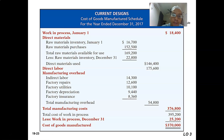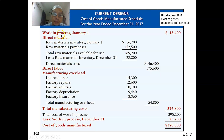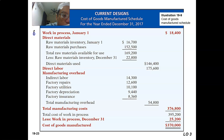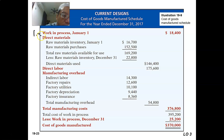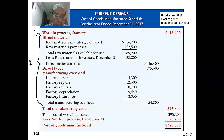In terms of a schedule to calculate all those things, this schedule is used by management to calculate the cost of goods manufactured. They will have the work in process, and after the work in process, they add the total manufacturing cost. The first part is the beginning work in process inventory. The second part is the total manufacturing cost — the manufacturing cost incurred throughout the period. When you add part one and part two together, you get the total cost of work in process.